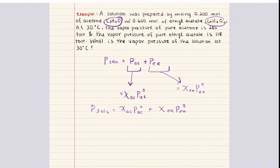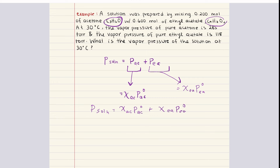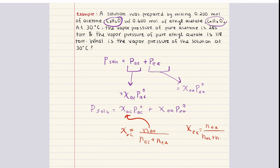Mole fraction is the moles of our component of interest divided by the total number of moles. For acetone, it's moles of acetone divided by moles of acetone plus moles of ethyl acetate. We can do the same for ethyl acetate: mole fraction of ethyl acetate equals moles of ethyl acetate over total number of moles.